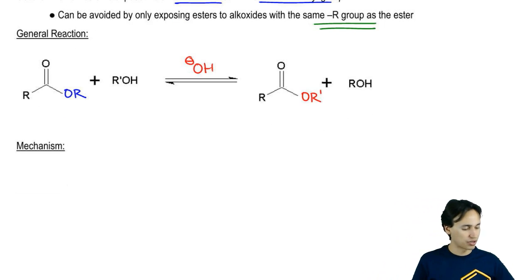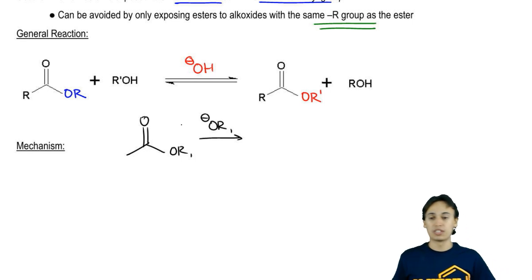I'm just going to bring this reaction down a little bit. Imagine that now I have R1 and I'm exposing it to an alkoxide that is OR1 negative. What's going to happen?